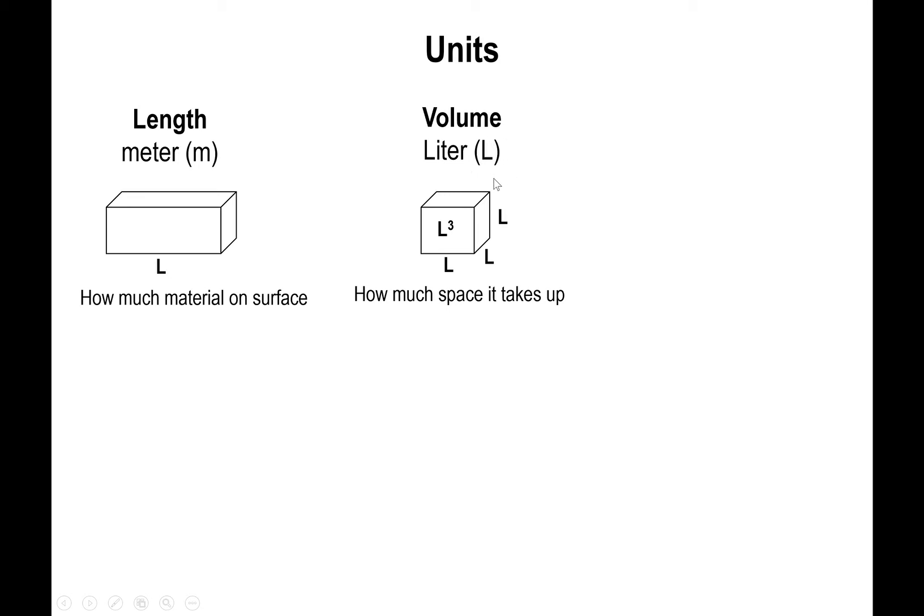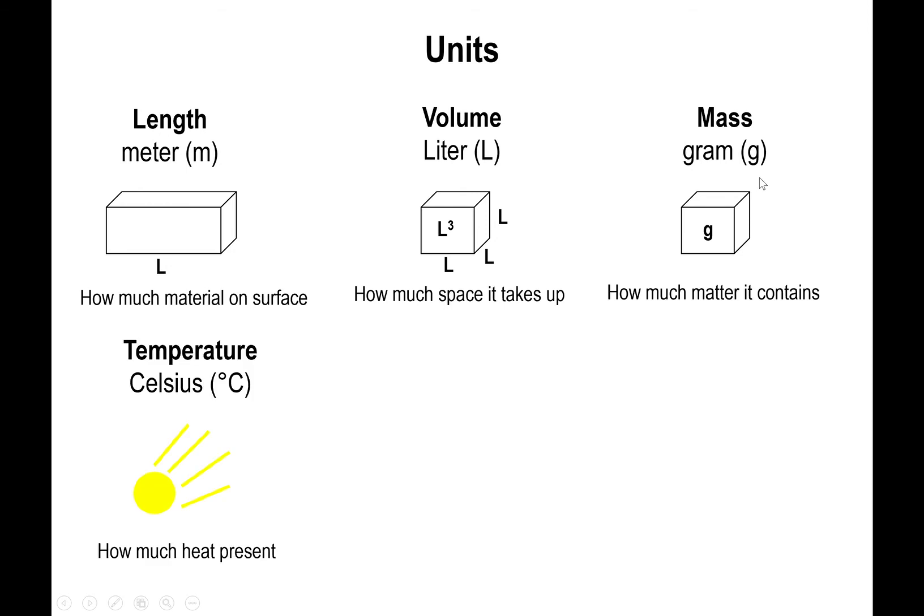If you deal with physics, you'll find out that the main scientific unit for volume is the cubic meter. I'm going to show you later how to change between liters and cubic meters. Then you have mass, which tells you how much matter something contains. The SI unit that chemistry uses is the gram.